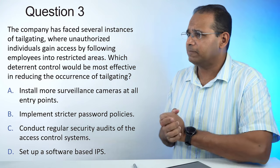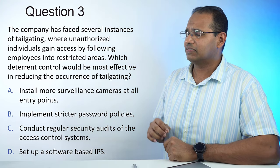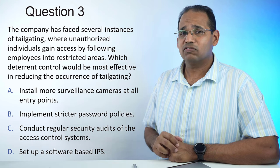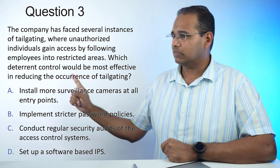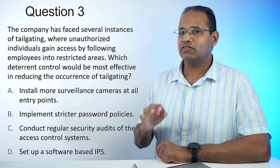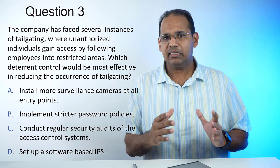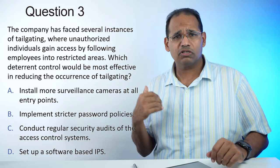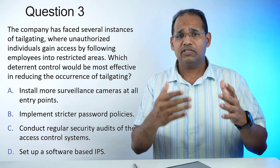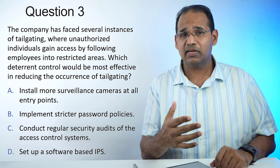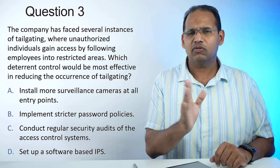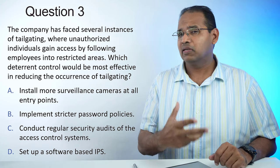Practice question number 3: A company has faced several instances of tailgating where unauthorized individuals gain access by following employees into a restricted area. Which deterrent control would be effective in reducing the occurrence of tailgating? Tailgating is when you walk through a door and somebody walks in with you before the door locks. You place your badge, it beeps you in and opens, then you walk in and before the door locks, somebody walks in behind you.